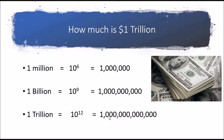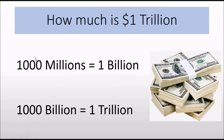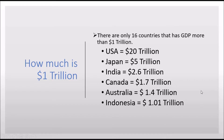There will be 12 zeros after 1. So let's compare million and trillion. 1,000 millions is equal to 1 billion. Similarly, 1,000 billions is equal to 1 trillion. Now you have the basic idea about how much is 1 trillion. Let's discuss the GDP in terms of trillion dollars.